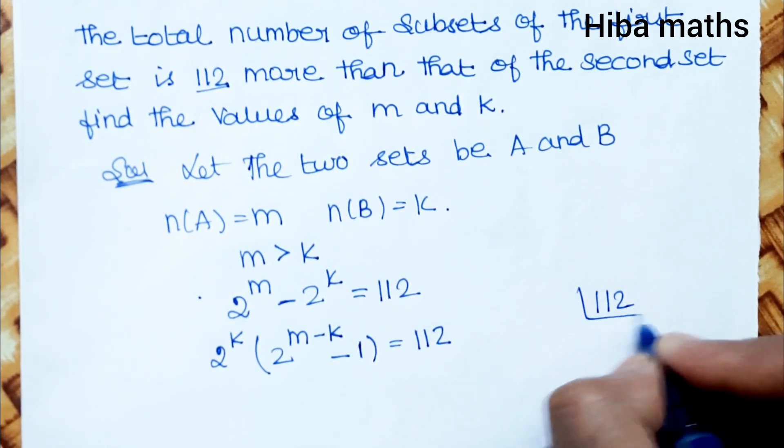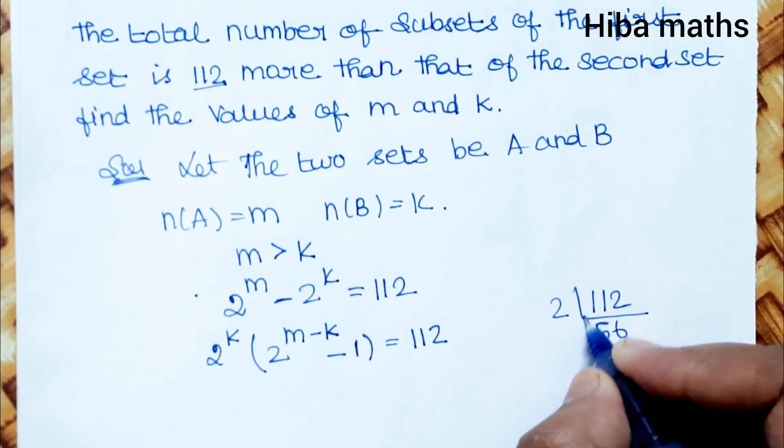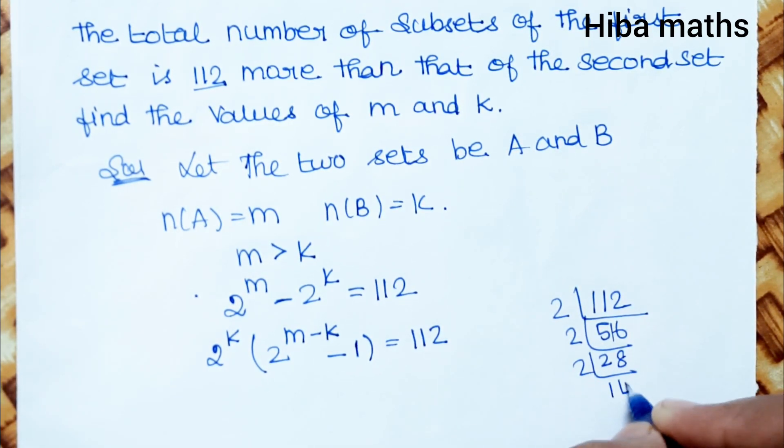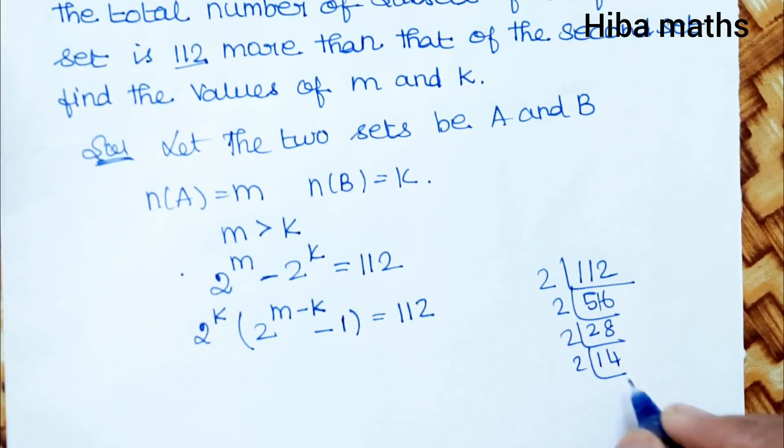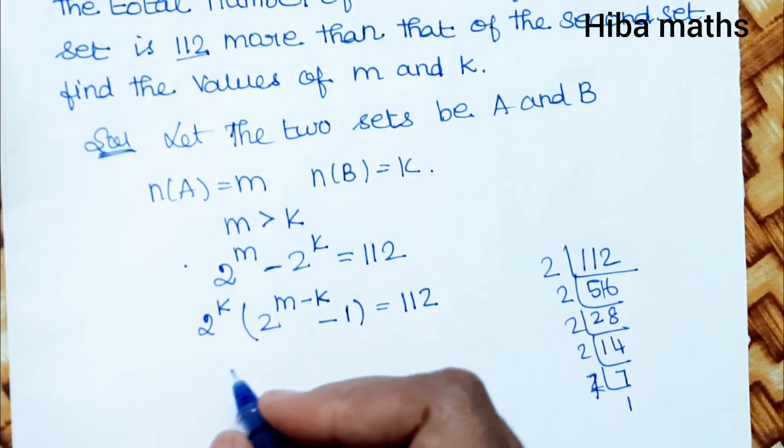Next step: 112 prime factorization. 2, 56; 2, 28; 2, 14; 2, 7; 7, 1. So 112 = 2^4 × 7.